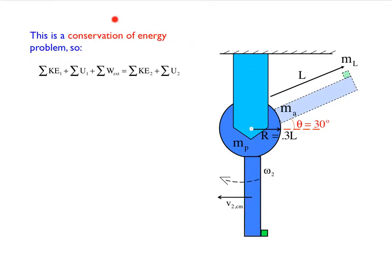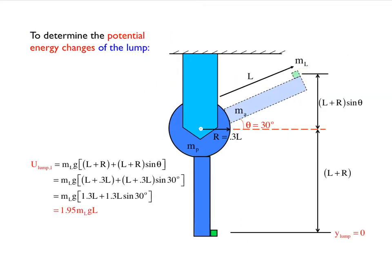Which means that this is a conservation of energy problem. What's tricky about it is trying to figure out the potential energy at the beginning and the kinetic energy at the end. So looking at the lump, you can see that its final position is going to be here, which is where I would take y equal to zero. The distance between there and where it started is going to be this distance, which is going to be the length of the arm plus the radius, L plus R, plus this angle's theta, so this is going to be R plus L sine of theta. You sum those two and it gives you the y coordinate to start with.